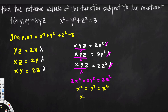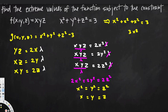Taking the square root gives x = y = z. We plug this into the constraint equation: x² + x² + x² = 3, so 3x² = 3, meaning x² = 1, and therefore x = ±1.